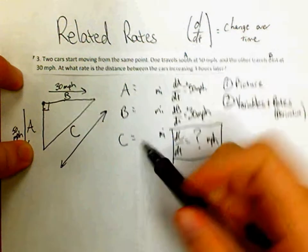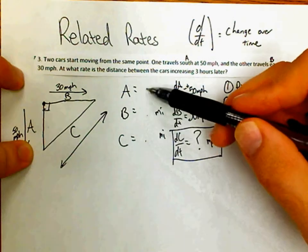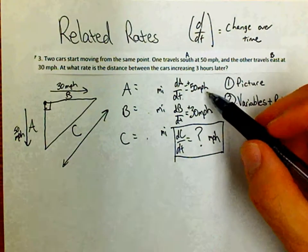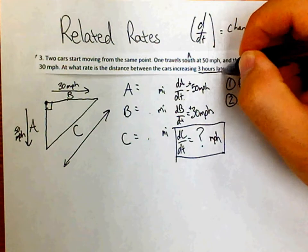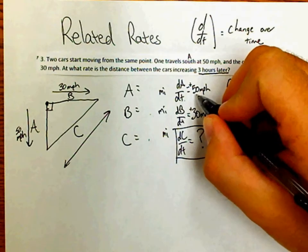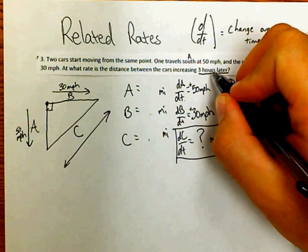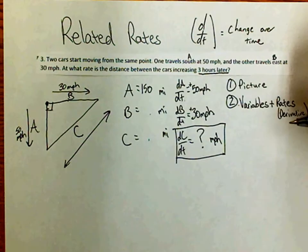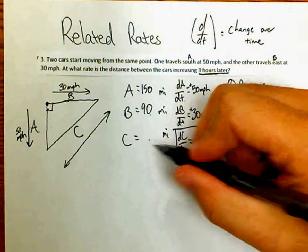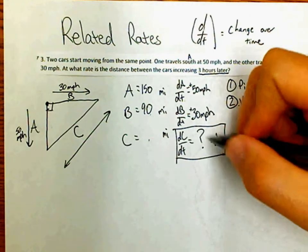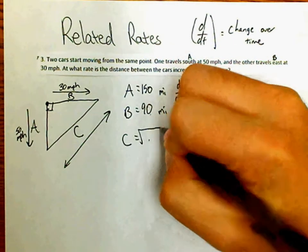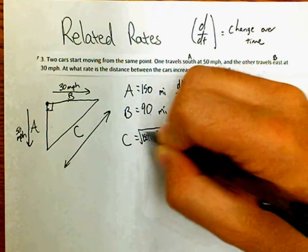I think we need to know the actual values of a, b, and c. They told us the speed of the cars and that the cars have been traveling for three hours. With basic math: if car A travels 50 miles per hour for three hours, it travels 150 miles. Car B travels 90 miles. I don't know c yet, but I can find it using the Pythagorean theorem: 150 squared plus 90 squared gives me c squared.